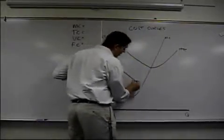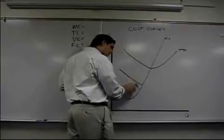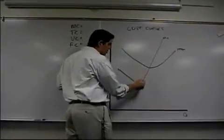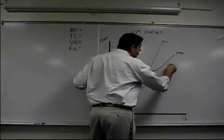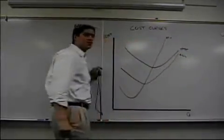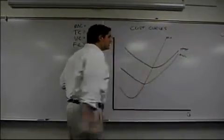Average variable cost looks like this. It goes down for the same reason. Marginal pulls it down. And when above, marginal pulls it back up. But it gets closer and closer and closer to ATC without actually touching. These get closer and closer without actually kissing.